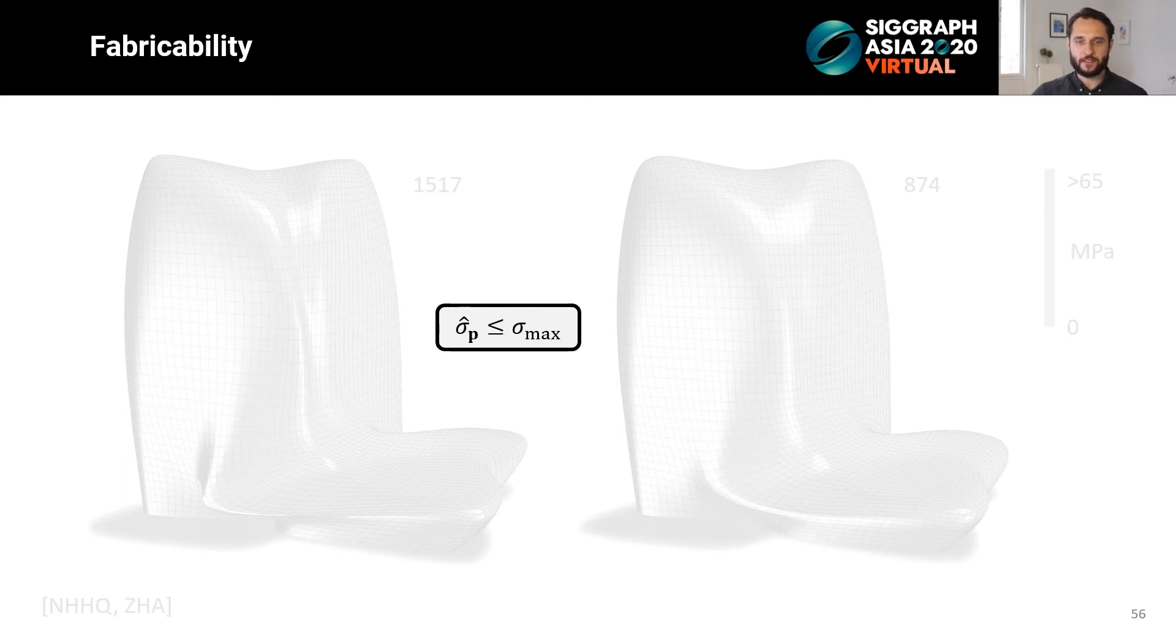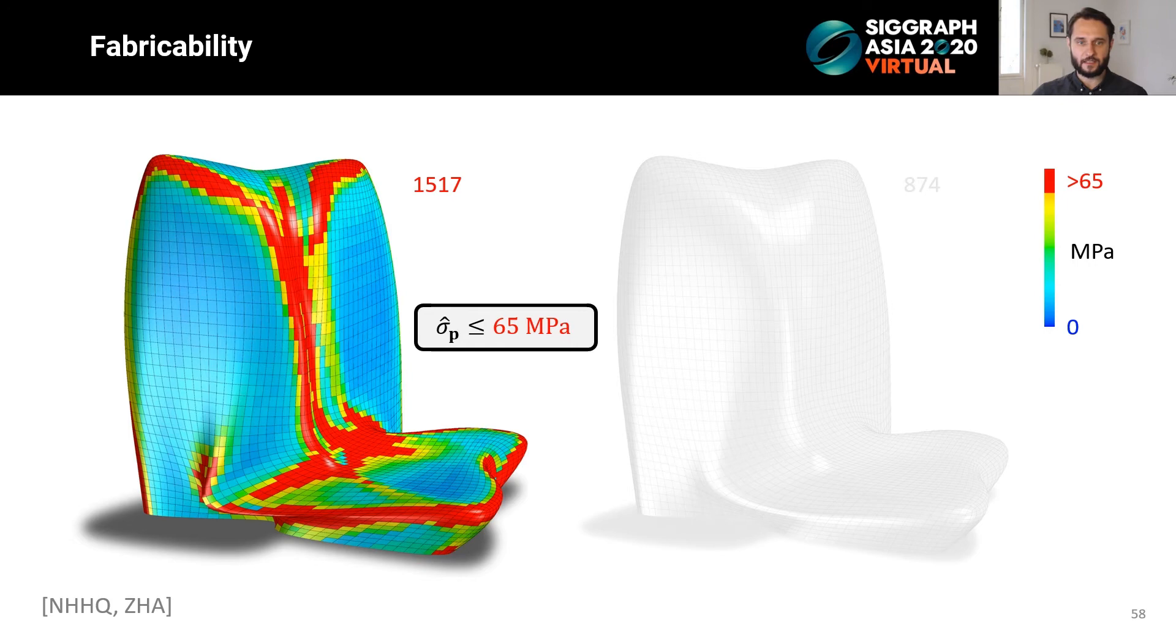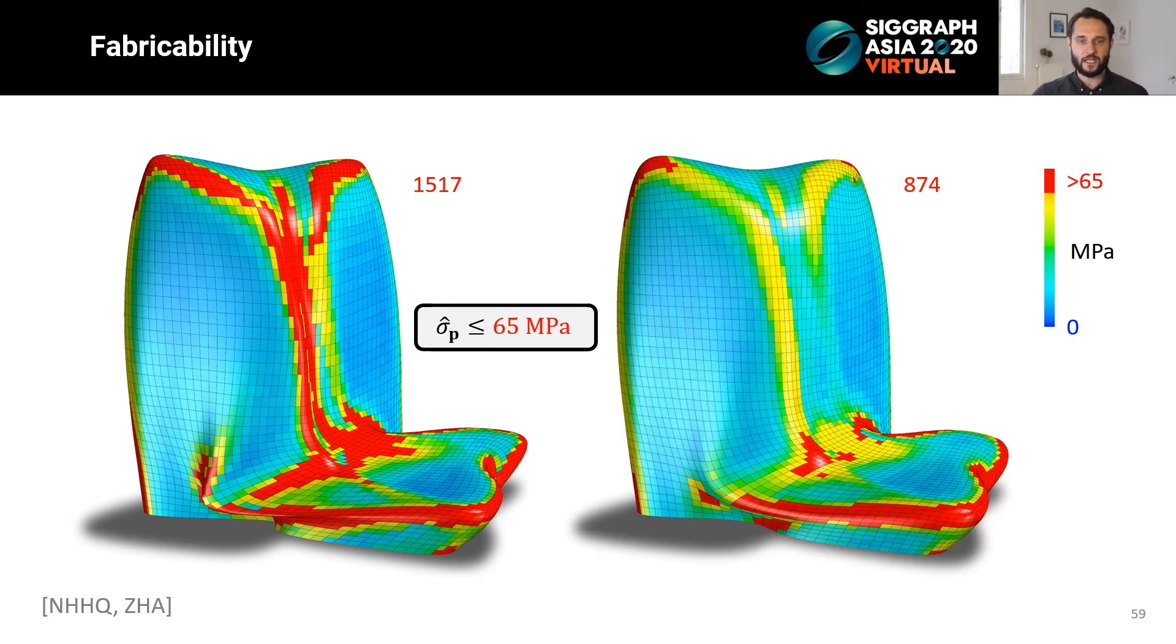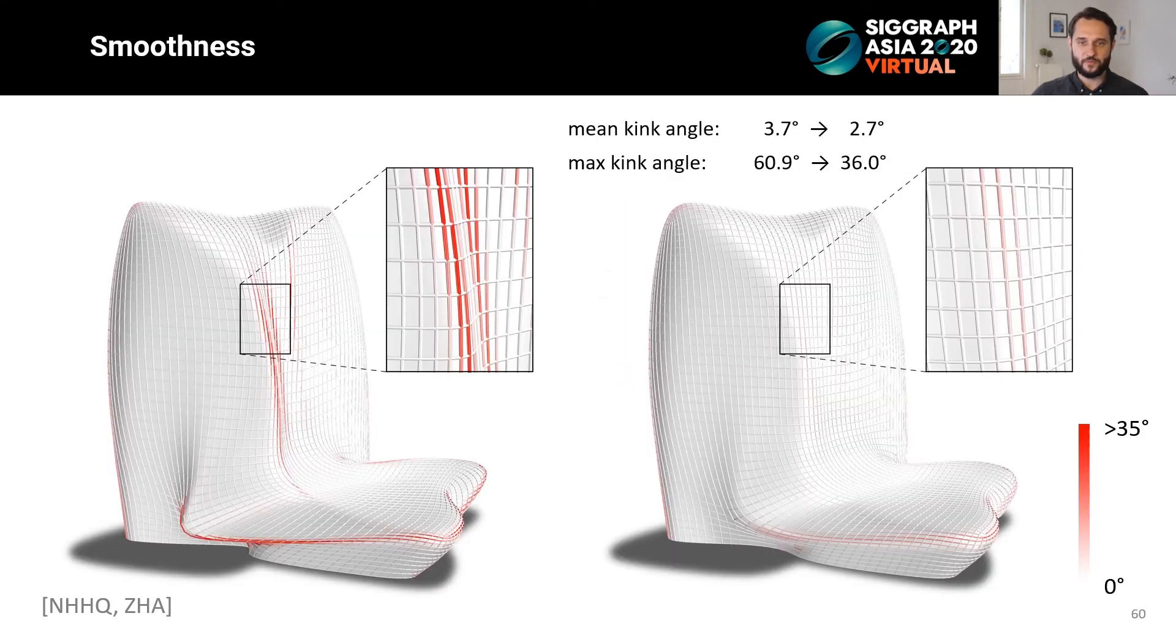Arguably, the most important property in our setting is the manufacturability of the final design. Glass failure occurs when the maximal stress of the panel exceeds the strength of the material, so we wish to keep the maximal stresses below that limit. This threshold value depends on the type of glass and the safety factor. We set it to 65 MPa. Consider this initial panelization of the NHHQ building by Zaha Hadid Architects. In red are the panels that have stress prediction that exceeds 65 MPa. Optimizing the design drops the number of breaking panels from 1500 to around 900, which amounts to roughly 40% reduction in the number of panels that would otherwise need to be hot-bent.